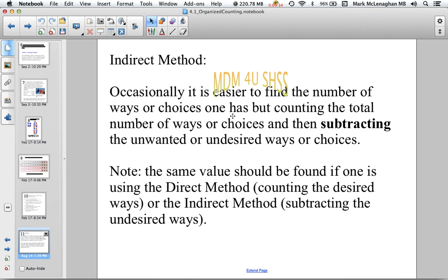Occasionally when we have a large problem, it's sometimes easier to use what they call the indirect method, which is the total number of choices minus the unwanted or undesired choices. You should definitely find the same value as the direct method. Usually one method is a little bit shorter than the other or easier to see and figure out. It doesn't matter which method you use, as long as you're doing accurate calculations.